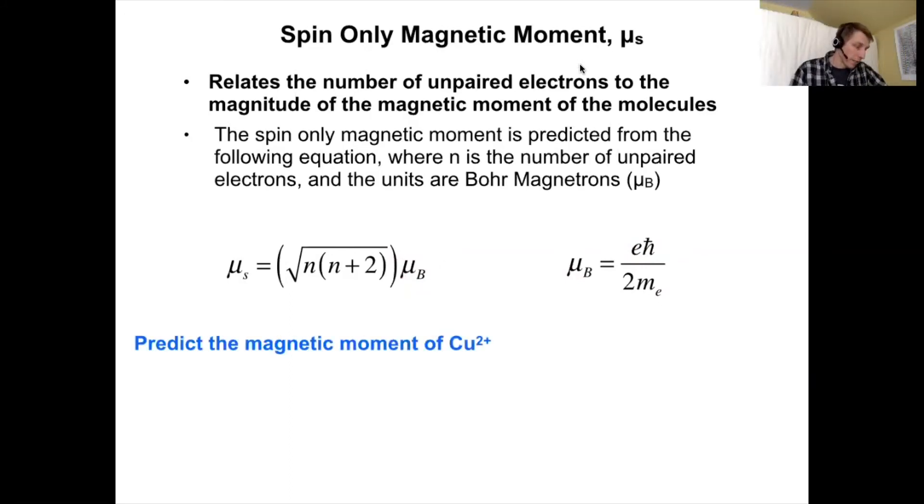For example, if we want to predict the magnetic moment of copper 2 plus, we'd have to ask ourselves how many unpaired electrons does the copper 2 plus ion have. Copper 2 plus will be a d9 metal and if that's a d9 metal then we can only have one unpaired electron. With one unpaired electron we could plug it into our equation and get mu sub s equals the square root of 1 times 1 plus 2 which equals 1.7 Bohr magnetrons.